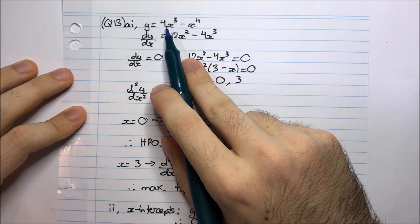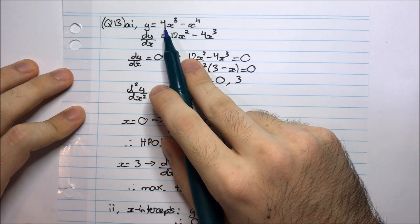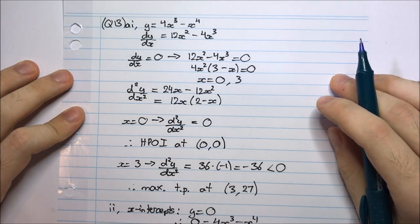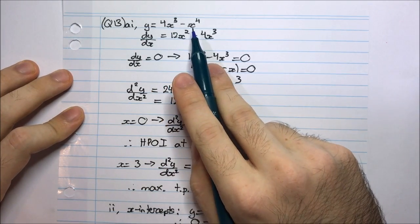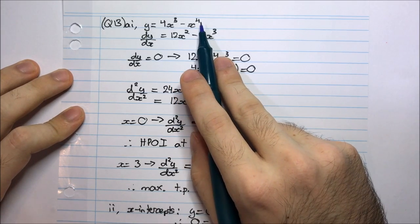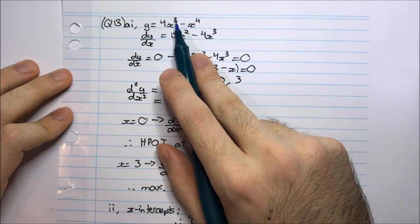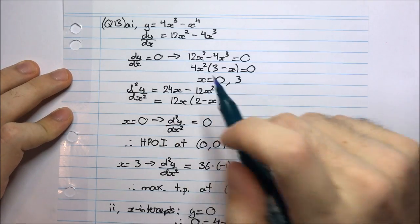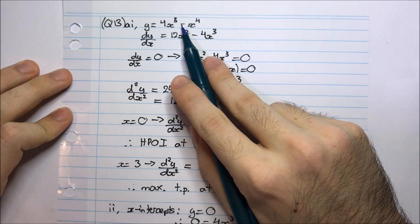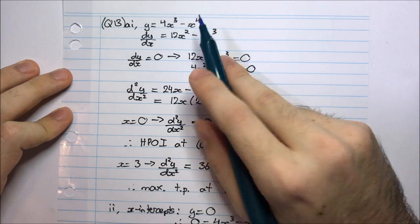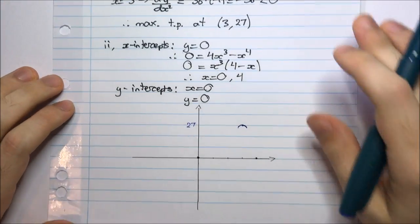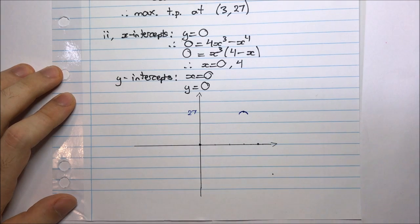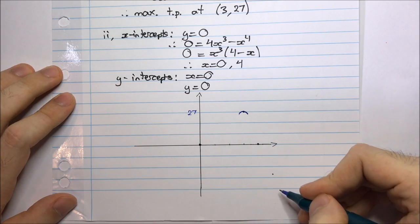Looking at my function — what happens when x becomes very large? When x approaches infinity, the x to the power 4 term is going to dominate the x to the power 3 term, because the higher the power, the more effect it has on the function's value. So it's going to be minus something very large — it's going to approach negative infinity.